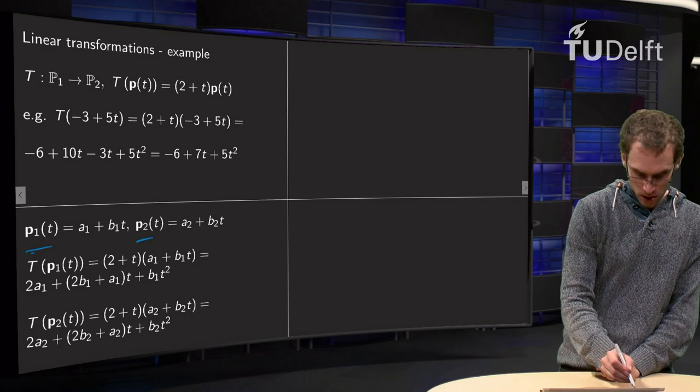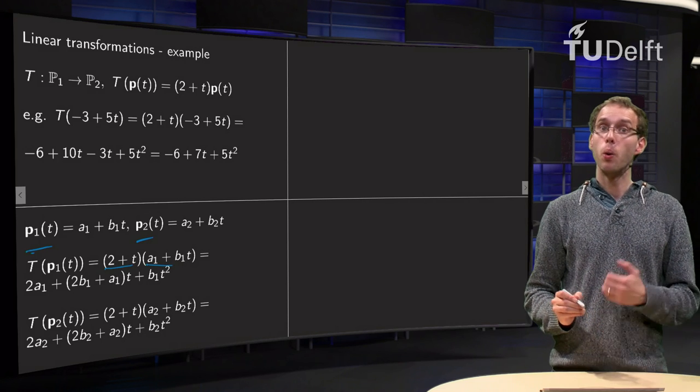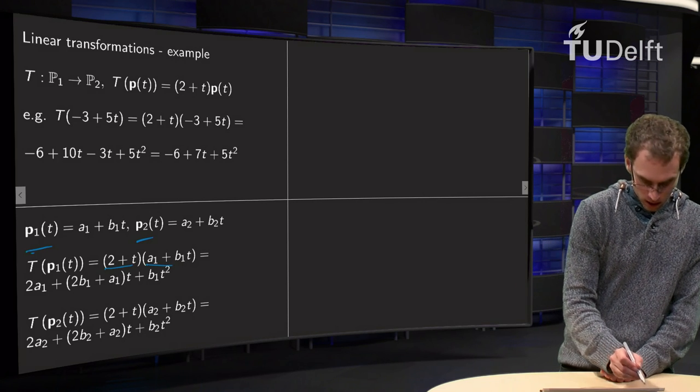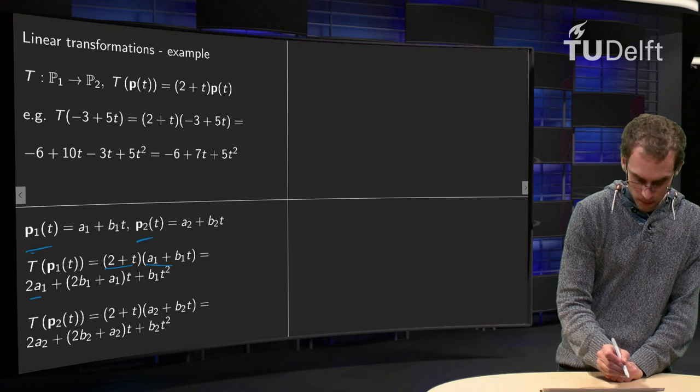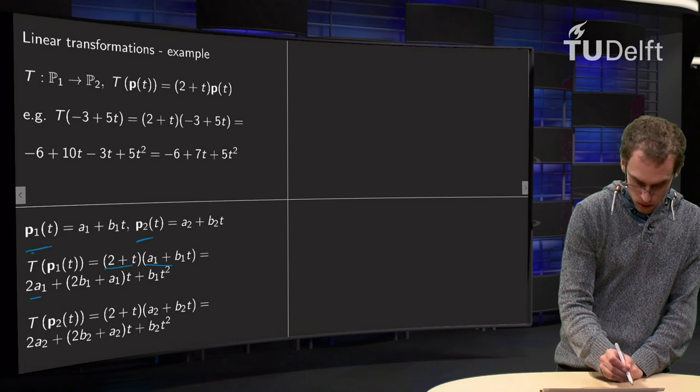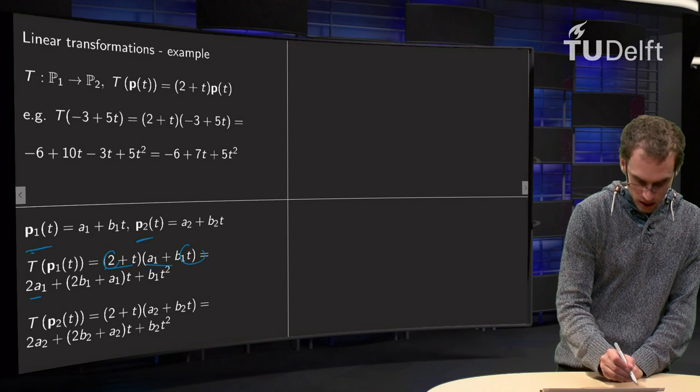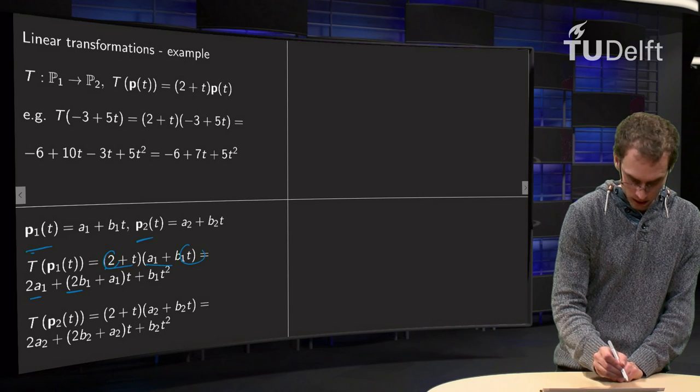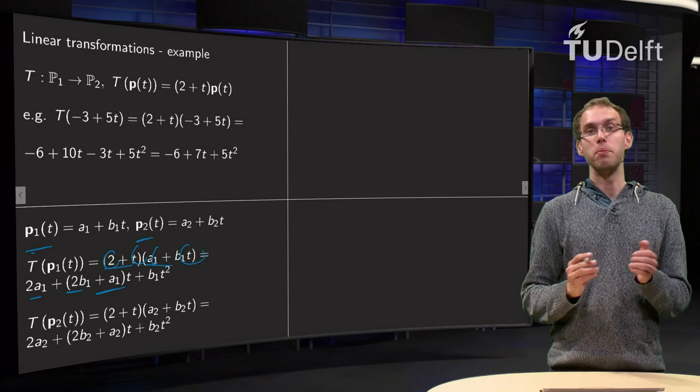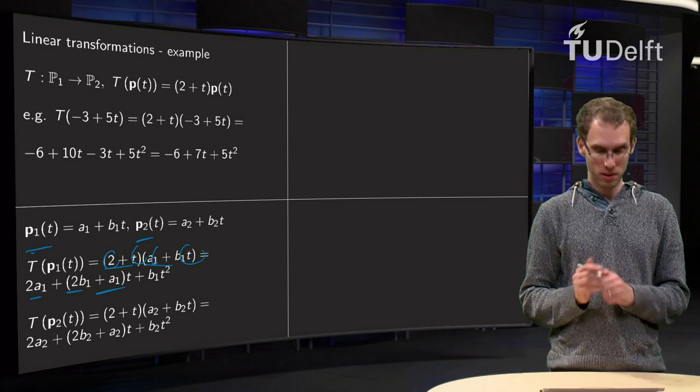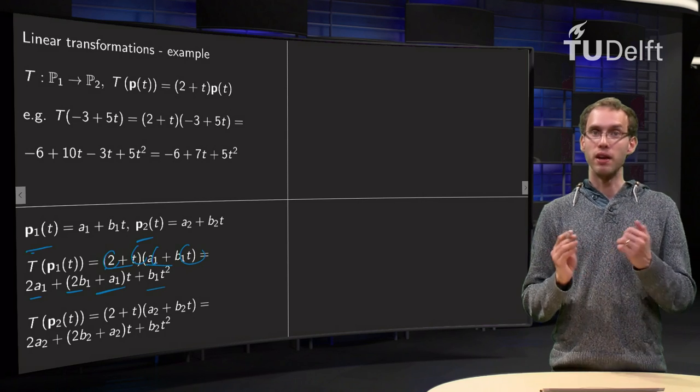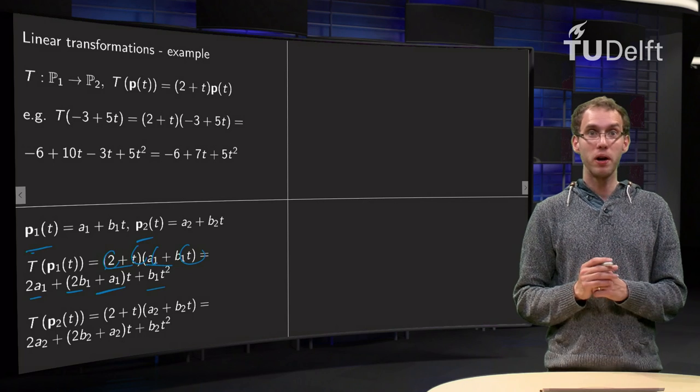The T of P1 equals (2 + t) times P1. Work out the brackets, we get 2 times a1, 2 times b1t over here, we get a1 times t over there and b1 times t squared. There we go.